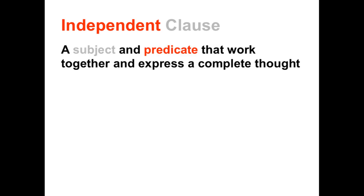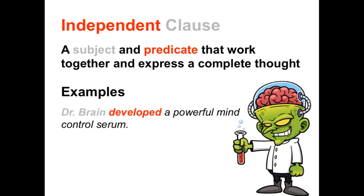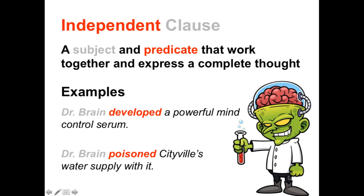An independent clause is when a subject and a predicate work together and express a complete thought. An independent clause could stand alone as a sentence by itself. Here is an example: 'Dr. Brain developed a powerful mind control serum.' We have the predicate 'developed' and the subject 'Dr. Brain.' By itself this sentence can stand alone. Here is another example: 'He's going to poison Cityville's water supply with it.' This clause has a subject and a predicate and expresses a complete thought, which means it is an independent clause.